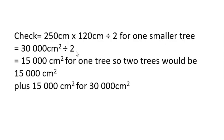Let's go back and check. We're going to check for just one tree. So 250 centimeters times 120 centimeters divided by two. That's for one smaller tree. It's 30,000 divided by two, which is 15,000 centimeters squared for one tree. So two trees would be 15,000 centimeters squared plus 15,000 centimeters squared for 30,000 centimeters squared. That was my example.